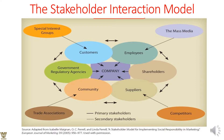Let me give a brief glimpse of the various stakeholder interaction models. We have SIGs (Special Interest Groups) looking at customers, media looking at employees, competitors looking at suppliers, and trade associations looking at communities. Customers also interact with government regulatory agencies and employees, and mass media looks at employees, customers, and shareholders. Secondary stakeholders are shown by dotted lines, while primary stakeholders are shown by bold permanent lines.